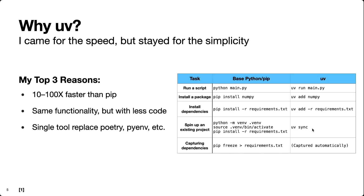Another benefit of uv is when you're trying to capture the dependencies of a Python project. Let's say you've been working for days on a project, you finally get it working with all the right libraries, and you want to capture these so you can share with other people. You might do `pip freeze` to store libraries in a requirements.txt file, but a lot of times this doesn't work well because there are things not specified when you do pip freeze. However, if you build your project using uv, the dependencies are captured automatically — no extra step required. Everything gets tracked whenever you add libraries to your virtual environment.